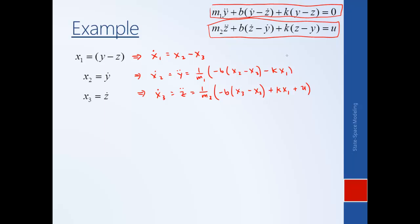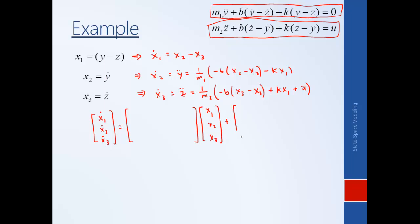So here we've rewritten the two second order governing equations as a series of three first order differential equations. Since they're linear equations, we can put them into matrix form. We define the vector of derivatives of the state variables equal to the A matrix multiplying the state variable vector [X1, X2, X3], plus the B matrix multiplying the input U.